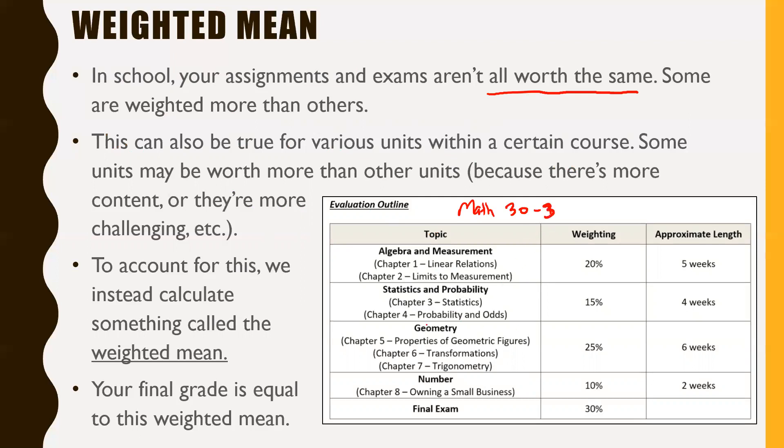Different units are worth different amounts. They have different weightings to them. To account for this and define the average grade you have in all of this stuff, we calculate something called the weighted mean. Your final grade is actually the weighted mean of all the things you've done in a course. It's not a normal mean, it's a weighted mean, because some things were worth more than others.